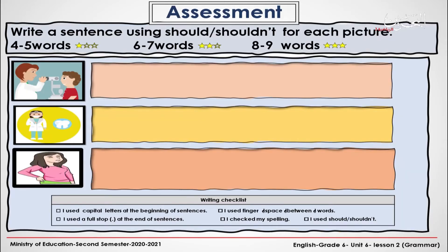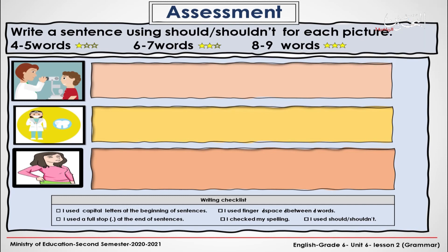Write a sentence using should or shouldn't for each picture. Remember, my students, those who write four to five words will get a star, those who write six to seven words will get two stars, and those who write eight to nine words will get three stars. Do not forget to use a capital letter at the beginning of each sentence and a full stop at the end. Use your finger between the words, check your spelling, and do not forget to use should and shouldn't. You have 30 seconds. Start.